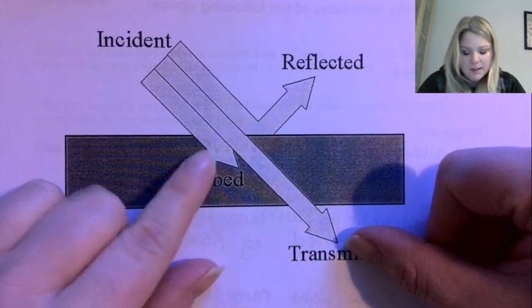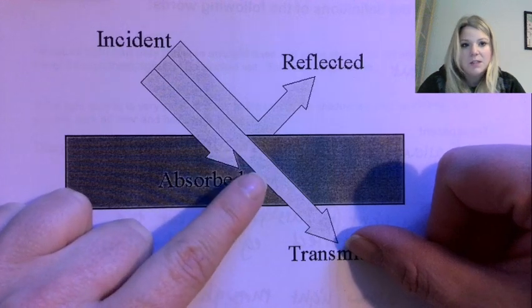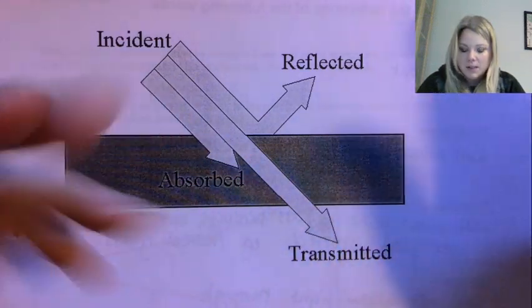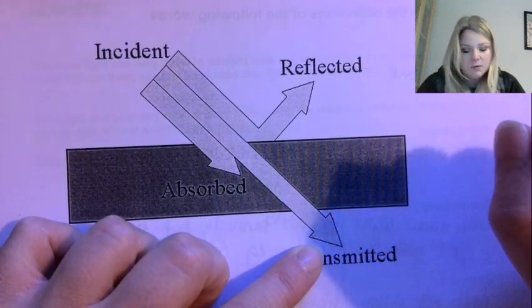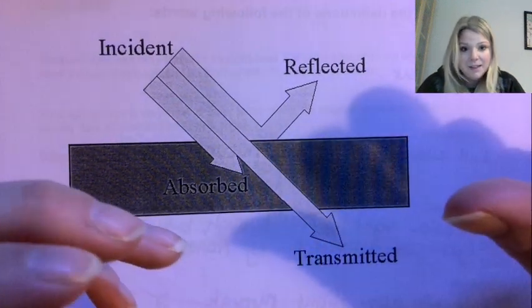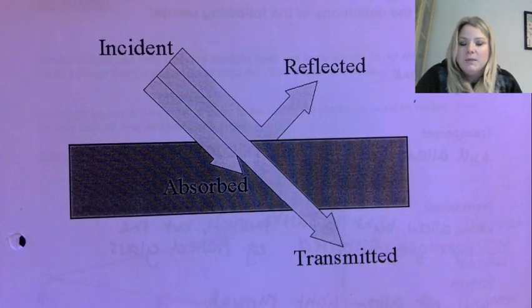So if something's transparent then most of the light, if not all of the light, will get transmitted through it, and if it's opaque then none will get transmitted through the material.